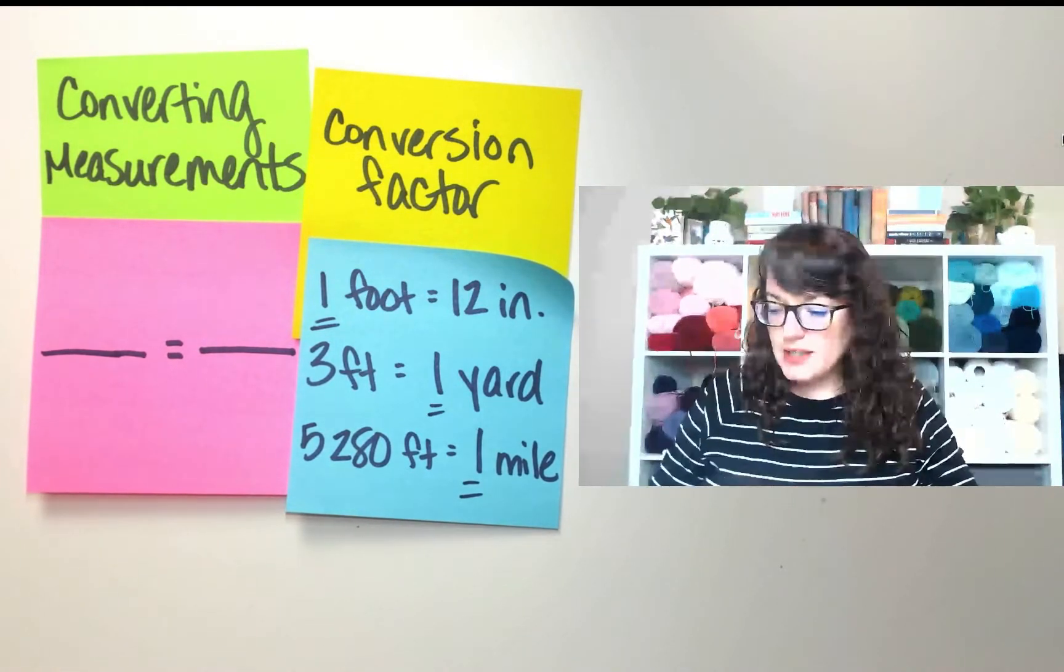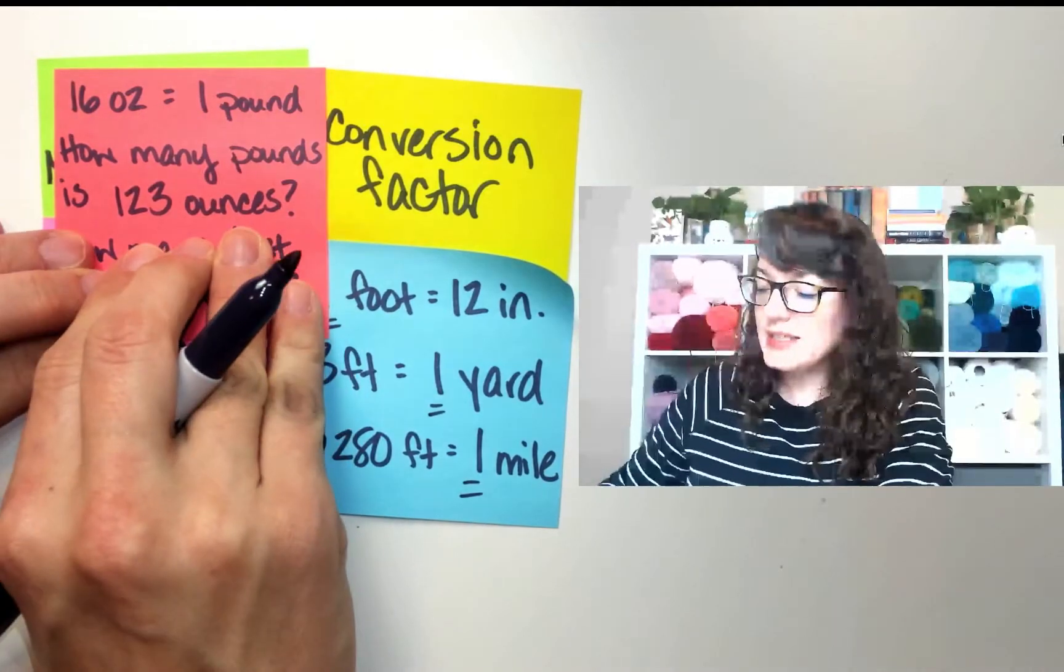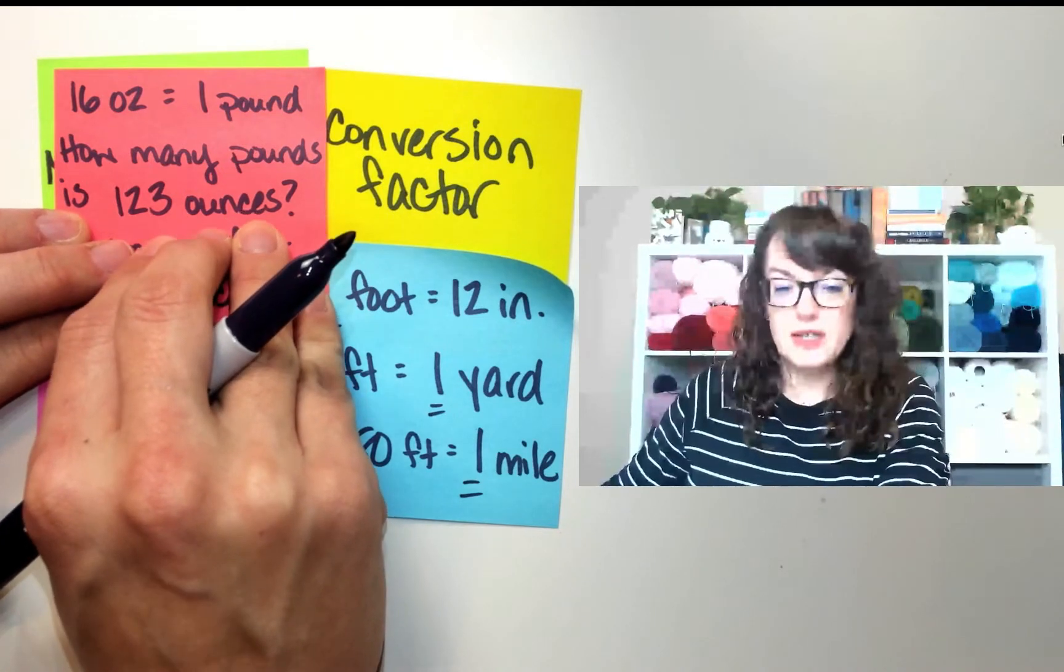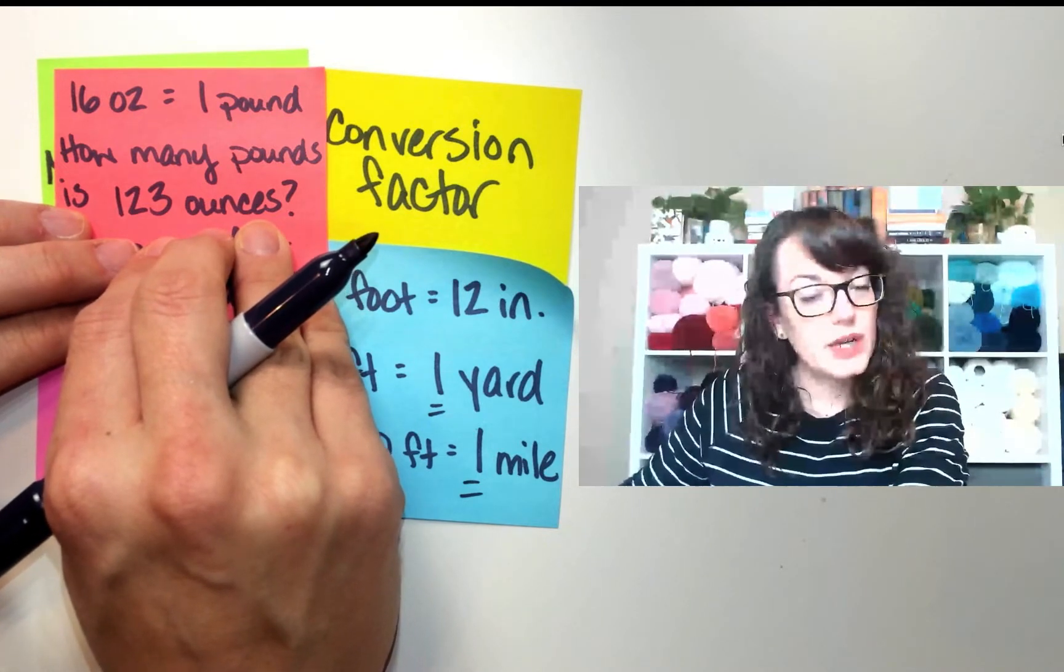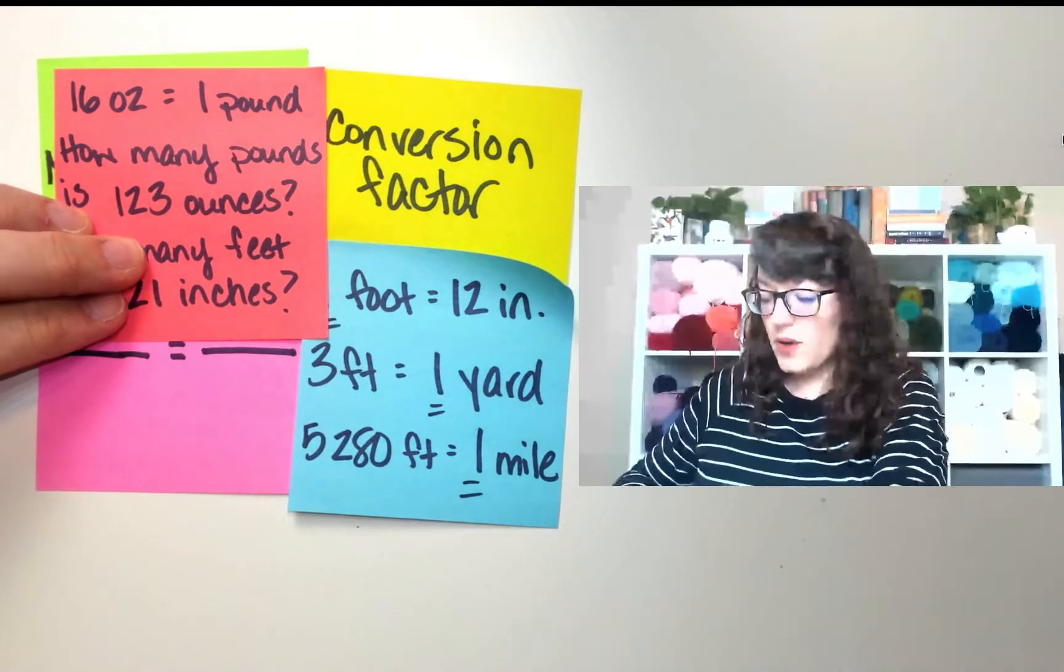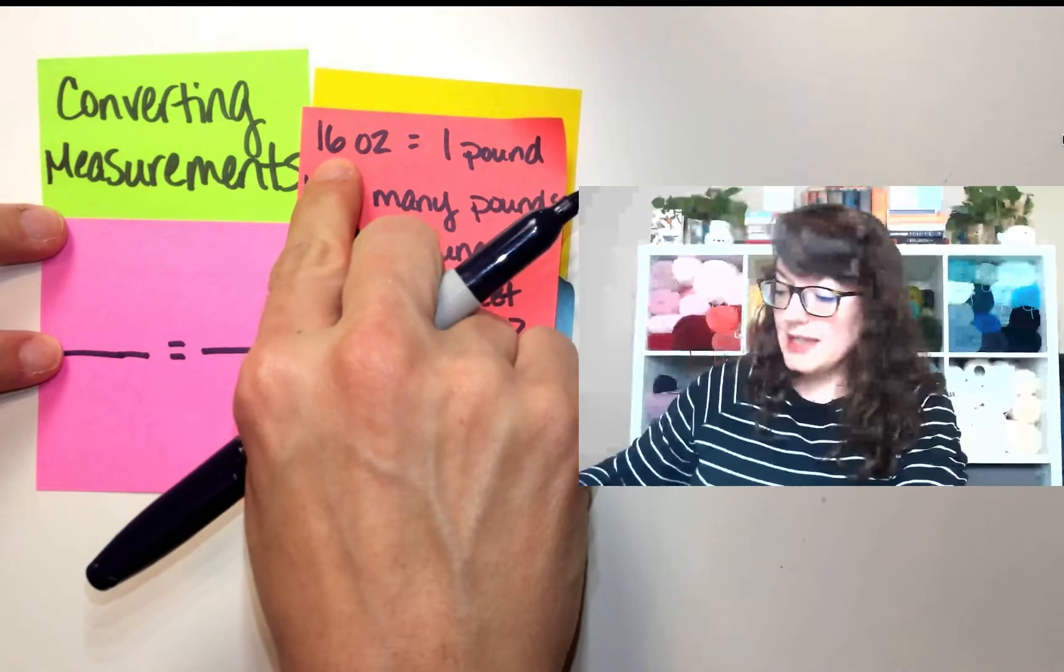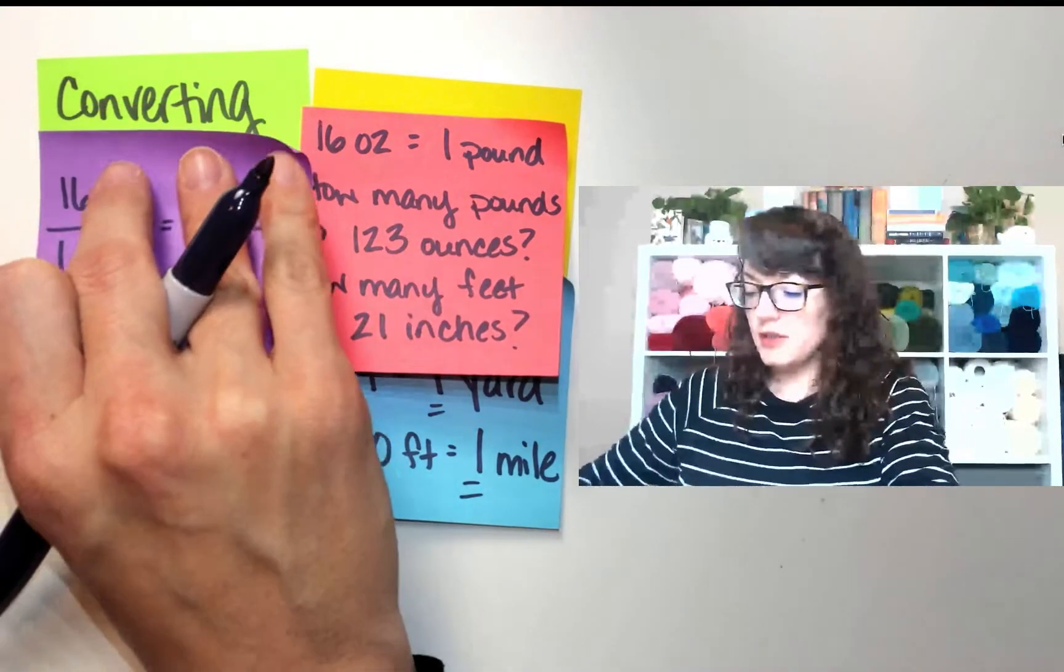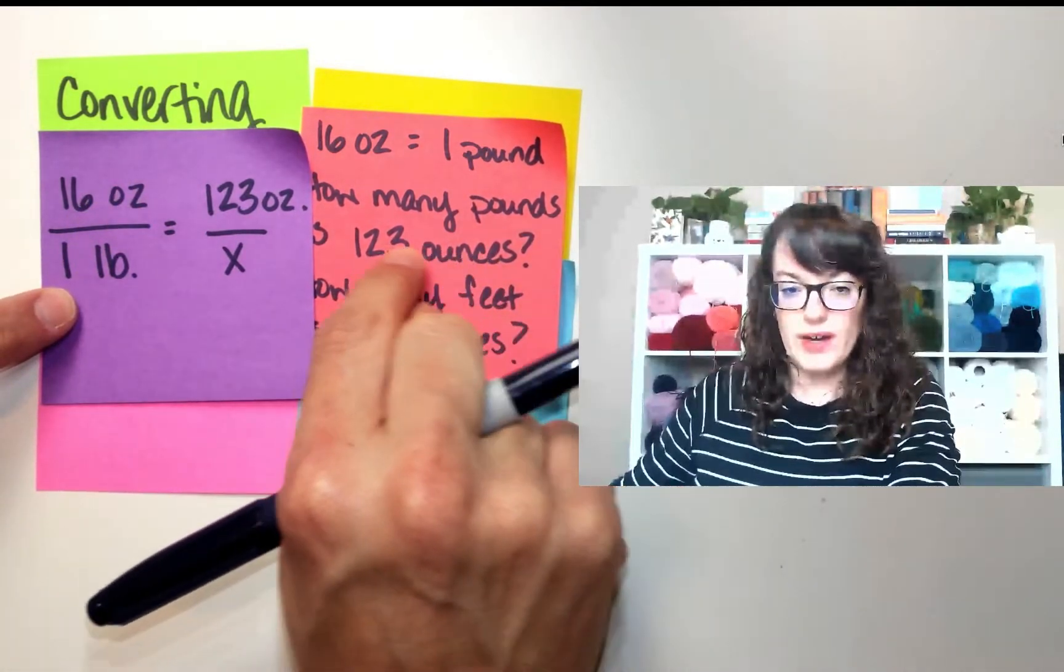So if I have this example: 16 ounces is one pound. So how many pounds is 123 ounces? Fun fact, that is how much I weighed when I was born. So when I set up my proportion, 16 ounces and one pound is going to be the first part of my proportion. 16 ounces and one pound, and then this is also ounces.